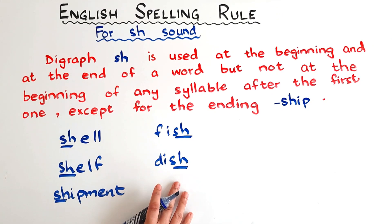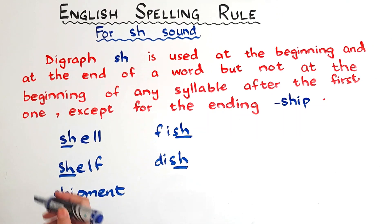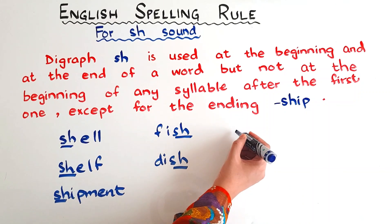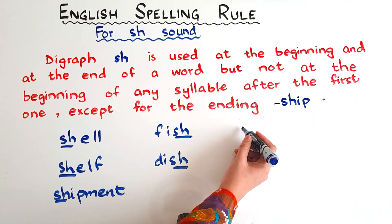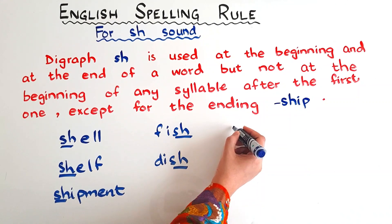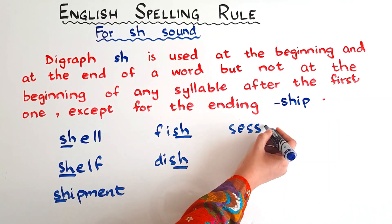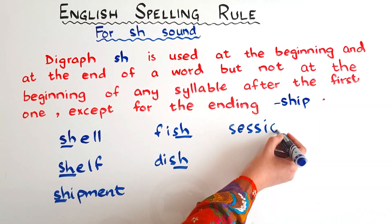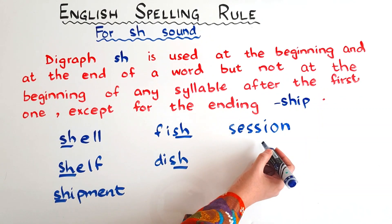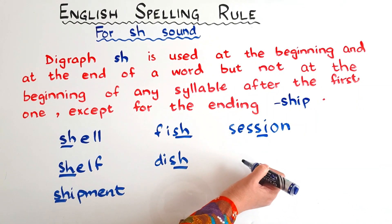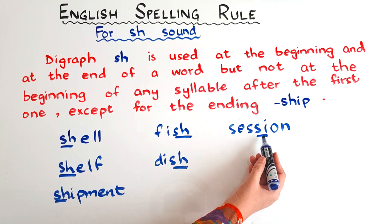But if you hear the SH sound at the beginning of a second or third syllable — for example, the word 'session' (S-E-S-S-I-O-N) — the SH sound is coming here, but we are not writing it with SH.